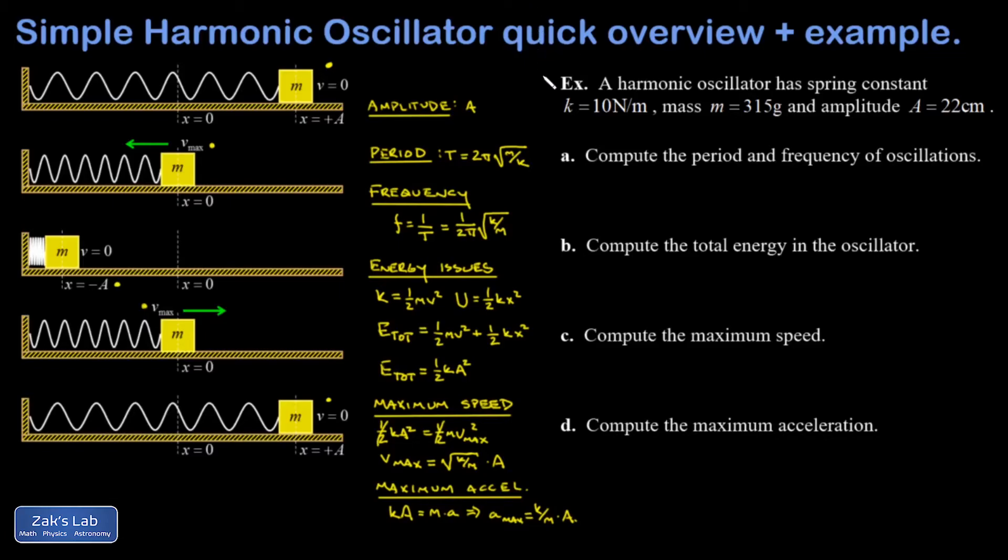So let's apply some of these ideas to a multi-part question. In my question I have a harmonic oscillator with a spring constant of 10 newtons per meter, a mass of 315 grams which I'm going to change to kilograms, 0.315, and an amplitude of 22 centimeters which I'll change to 0.22 meters.